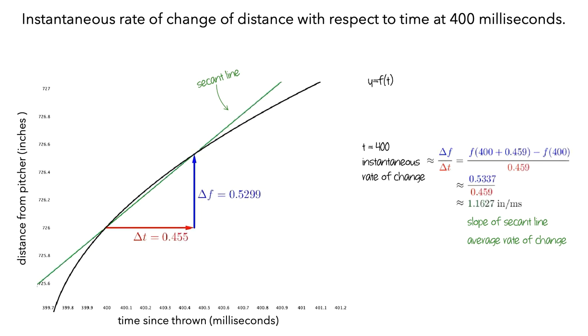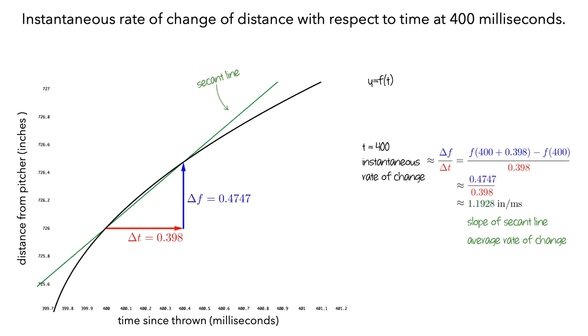We can improve our approximation by computing an average rate using a smaller interval of time. The image shows the rate of change over the interval from 400 milliseconds to just before 400.4 milliseconds.